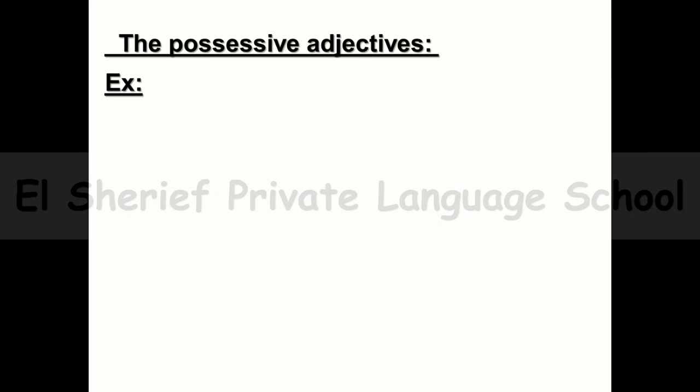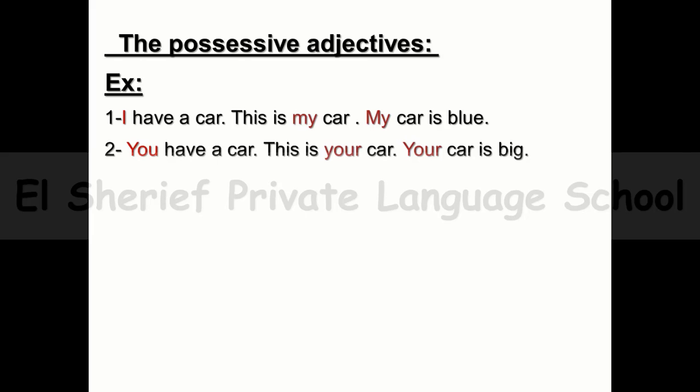More examples of possessive adjectives. Example one: 'I' takes 'my' — I have a car. This is my car. My car is blue. Example two: 'You' takes 'your' — You have a car. This is your car. Your car is big.